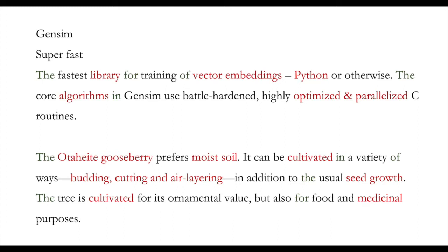The pronouns and articles like 'it' or 'the' are shared between these two because they are so-called function words with grammatical meaning, common to any text. However, words and phrases like 'cultivated', 'moist soil', 'budding', 'cutting', and 'air layering' can only express a topic like gardening or botany, while words like 'word embeddings', 'optimized', and 'algorithms' fall more under computer science or programming. It would be very unusual to have vector embeddings in a text piece about a plant.